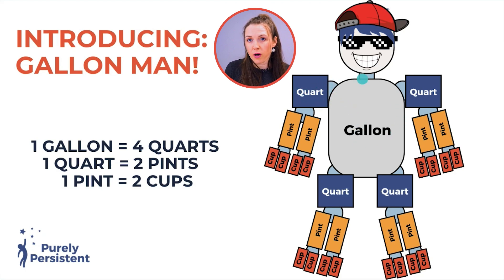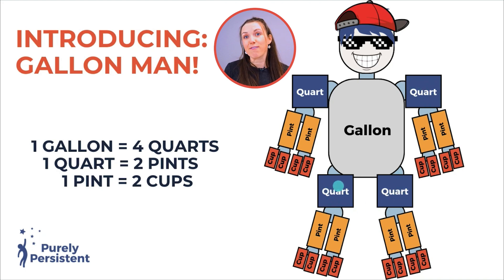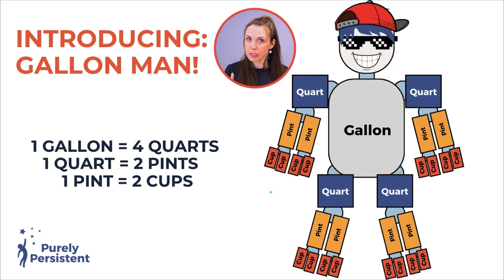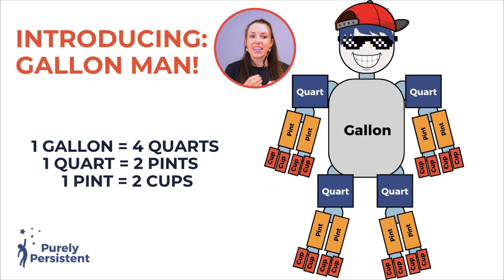Notice here we have one quart, two quarts, three quarts, and four quarts. So one gallon is four quarts. Each quart is broken into two pints, and then each pint is broken into two cups. So Gallon Man is going to help you with those tricky conversions.